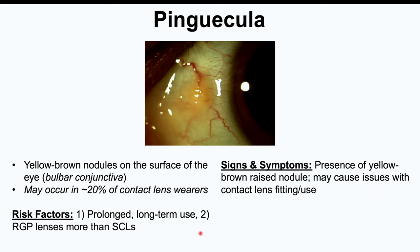Signs and symptoms of a pinguecula include the presence of a yellow-brown raised nodule on the eye. In contact lens users, it may cause issues with contact lens fitting or use, depending on how close the pinguecula is to the cornea — if it is very close, the contact lens may come into contact with the pinguecula and lead to fitting issues.